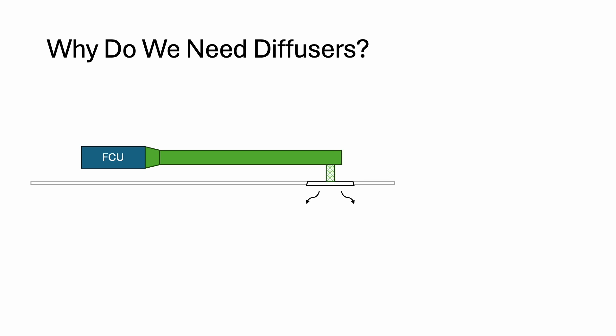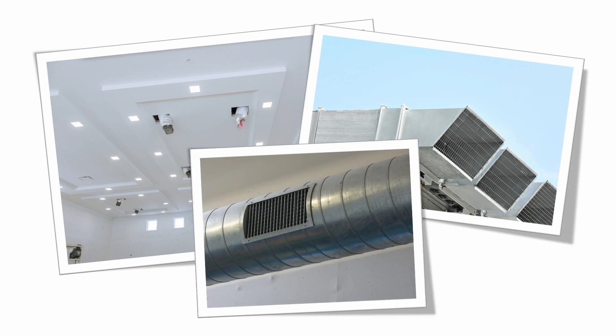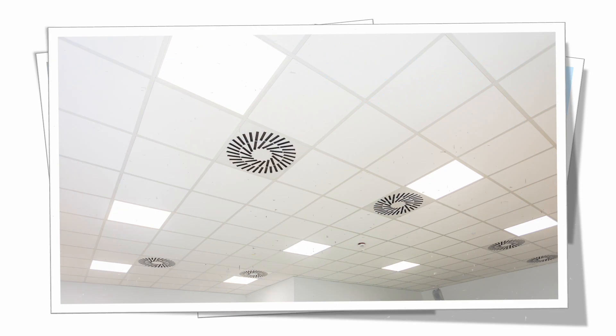Now why can't we just run the duct all the way to the ceiling and leave it there? I mean, there will be nothing blocking the airflow — we will have less air resistance and we save costs. The reason why we can't do that is obviously the ceiling will look very weird with a few holes here and there, but we can solve this by covering them with a net. So why do we need this type of fancy looking diffuser?